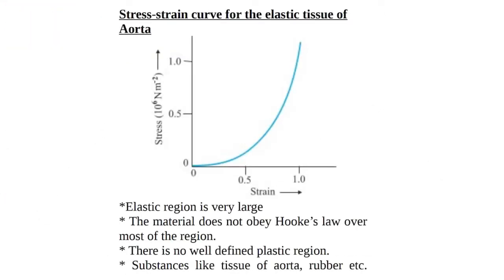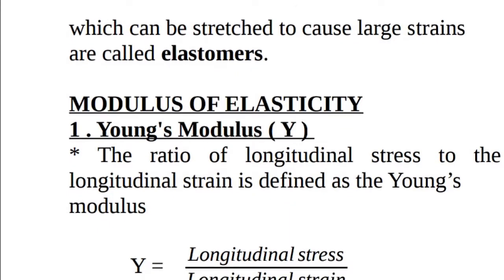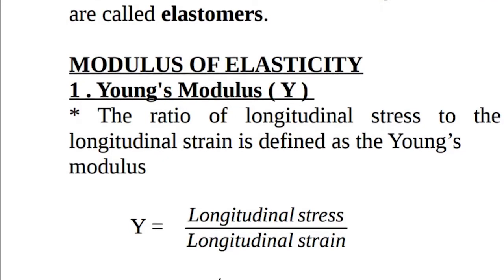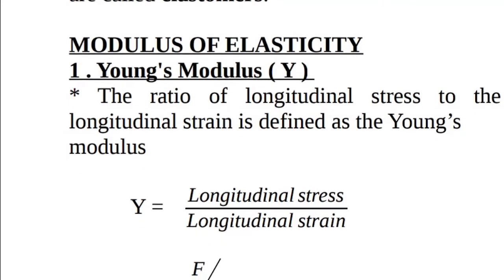The stress-strain curve for the elastic tissue of the aorta — the main blood vessel — shows its elastic nature. This material does not obey Hooke's law over most of the region, and there is no well-defined plastic region. Substances like aortic tissue, rubber, etc., which can be stretched to cause large strains, are called elastomers.